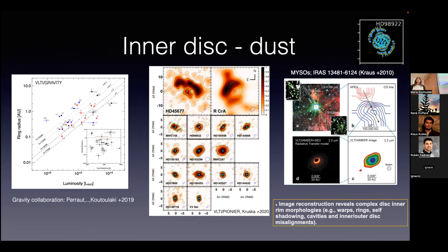Although a lot has been done for low mass and intermediate mass stars, not much has been done in the case of massive stars. This is actually the first image of a massive young stellar object, done in 2010, and since then this is the only image we have. This was actually the first detection that massive stars can also have disks — something that had been predicted by theory. It shows that image reconstruction is really important, and it reveals rings, self-shadowing, and many structures. There is a lot of work to be done.